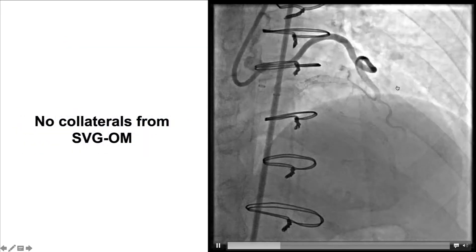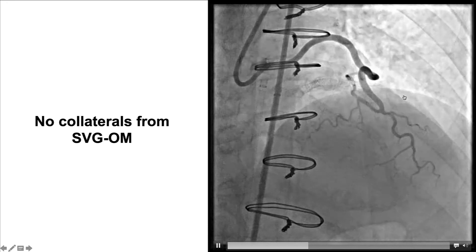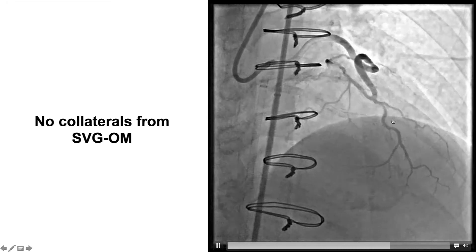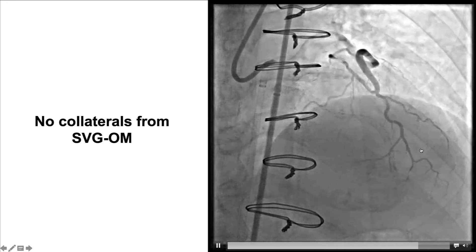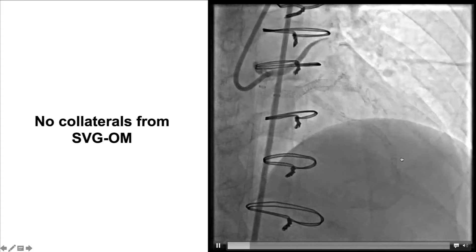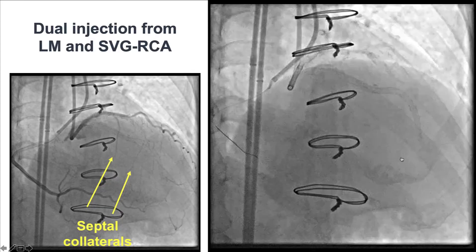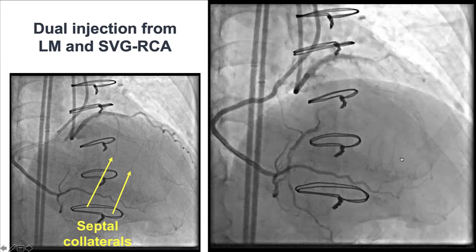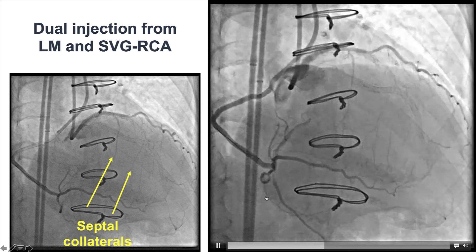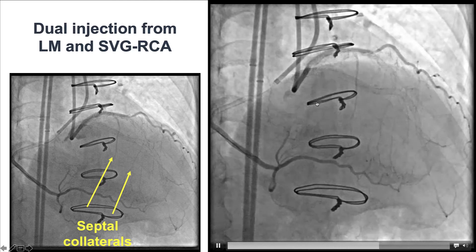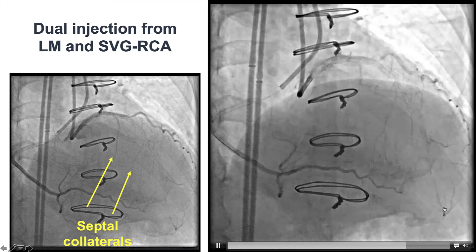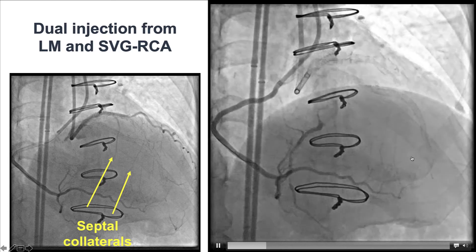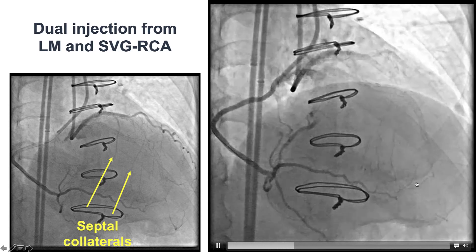We injected another vein graft supplying the obtuse marginal, which was patent without any lesions. However, there were no collaterals going to the LAD. We also performed a dual injection injecting the saphenous vein graft to the posterior descending artery, which demonstrated some filling of the distal LAD through septal collaterals.